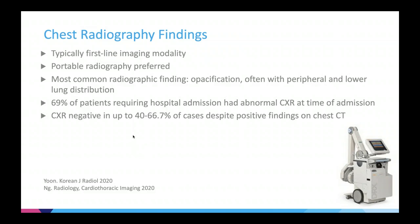For example, this is a 25-year-old female presenting to the ED at Mount Sinai with seven days of fever and shortness of breath, subsequently diagnosed with COVID-19 based on RT-PCR. The chest x-ray was completely negative and normal. However, on the chest CT done within a day, you can see multiple areas of round ground glass opacity at the periphery and posterior areas of the lung — typical for COVID-19 infection.